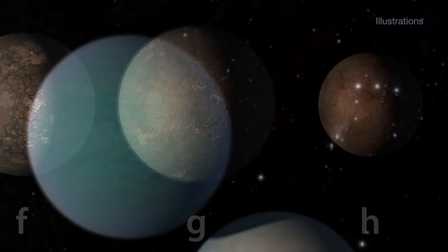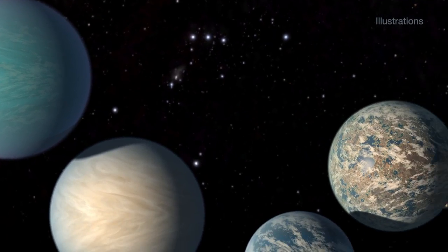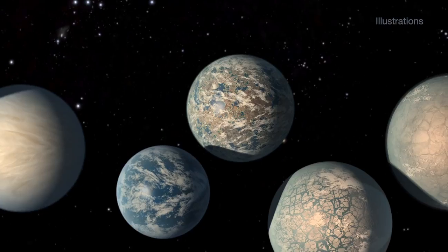It's worth noting, though, that even the planets outside the habitable zone still might be able to have liquid water somewhere on its surface in certain conditions.